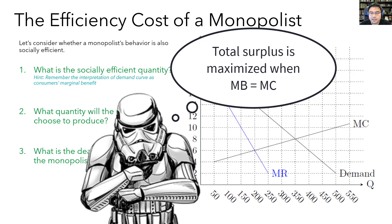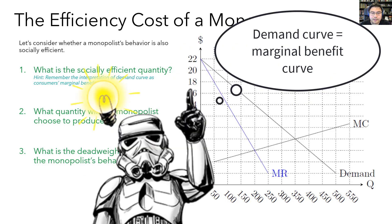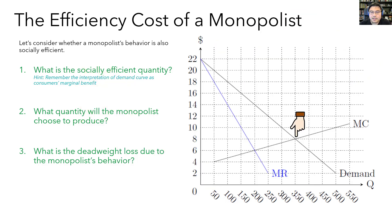Since consumers are ultimately the beneficiaries of the goods and firms are the ones bearing the costs of producing the goods, total surplus is maximized when the marginal benefits to consumers equals the marginal cost to the firm. The demand curve is the same as the marginal benefits curve for the consumers, so total surplus is maximized when the demand curve intersects the monopolist's marginal cost curve — and that happens right here. So the quantity that maximizes total surplus is 350.